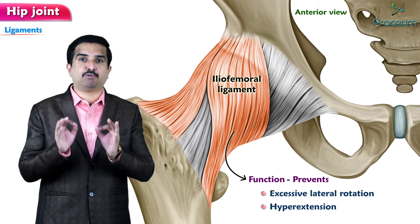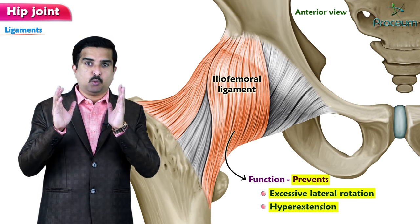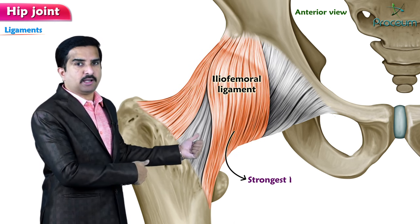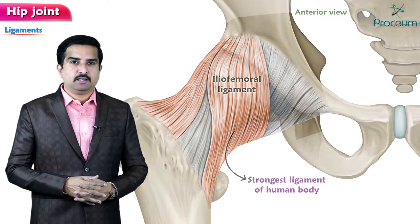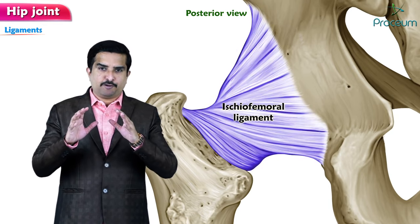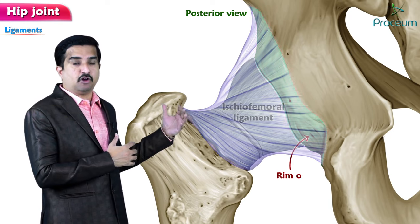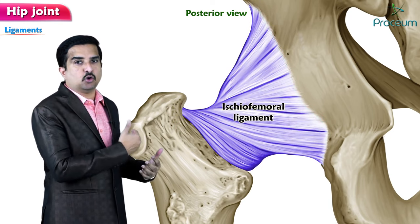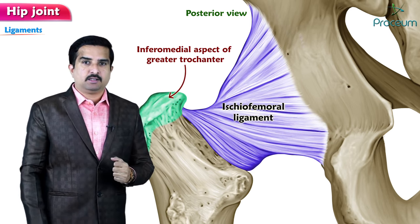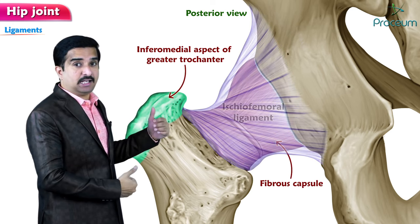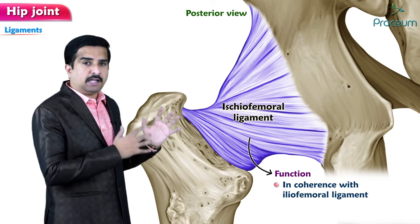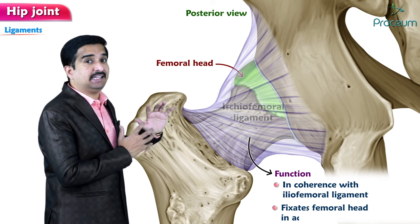This is especially important when the subject is in the standing position. Another key point to remember: the iliofemoral ligament is the strongest ligament of the human body. The second important ligament is the ischiofemoral ligament, which originates from the rim of the acetabulum and inserts over the inferomedial aspect of the greater trochanter of the femur, reinforcing the fibrous capsule anteriorly.